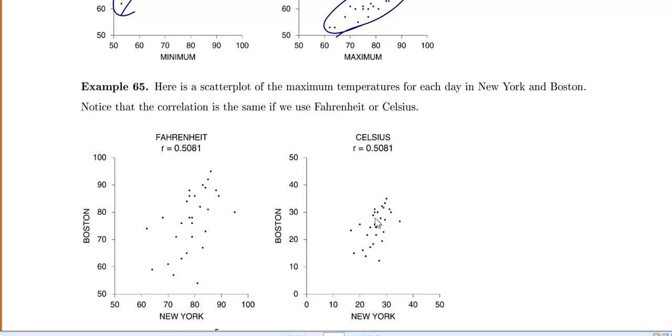And here even though my plots look a bit different the correlation is exactly the same. All we did was change the scale because to get to Celsius the formula to get from Fahrenheit to Celsius is you take each Fahrenheit value minus 32 degrees and then times by 5 ninths.